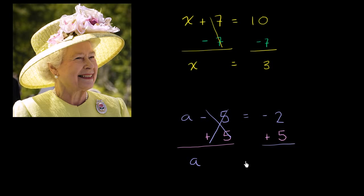On the right-hand side, and they're going to stay equal because I did the same thing to both sides, we have negative 2 plus 5, which is equal to 3. So a is equal to 3.